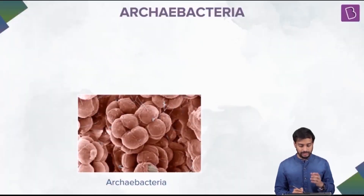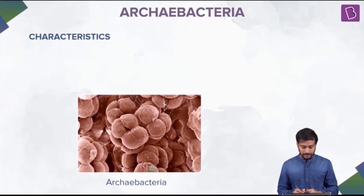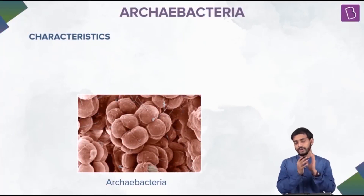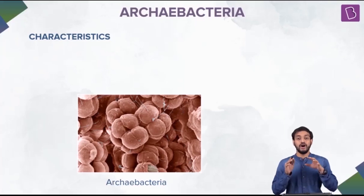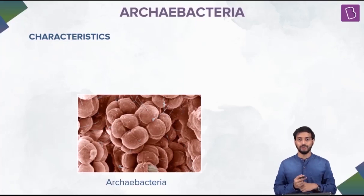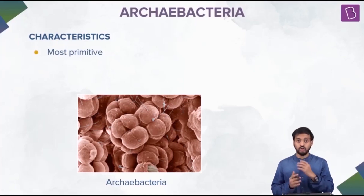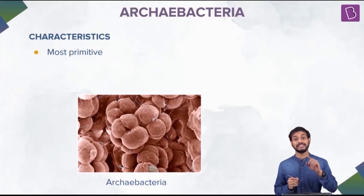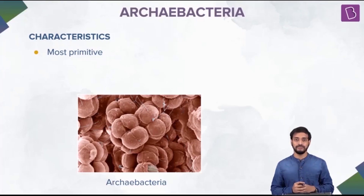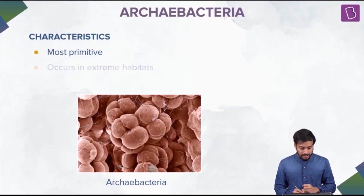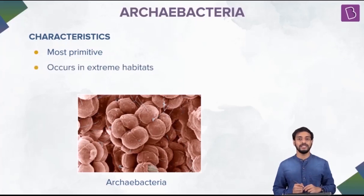In the image you can see archaebacteria — these are clustered cells. Let's talk about the characteristic features of archaebacteria. Recall what we studied in the six-kingdom classification or the three-domain classification proposed by Carl Woese. These are one of the most primitive organisms, so ancient that they are also known as the living fossils, because they are one of the earliest forms of life that still exist on Earth.